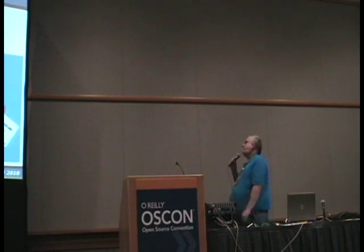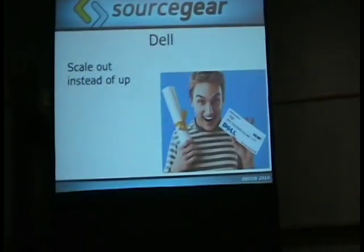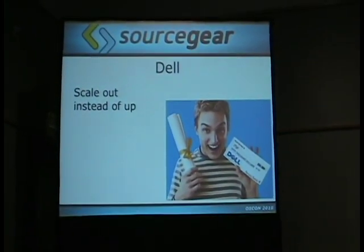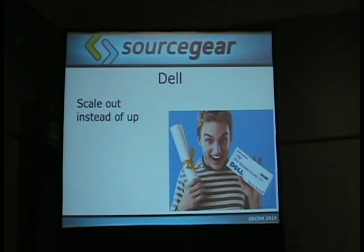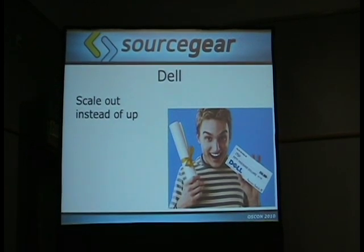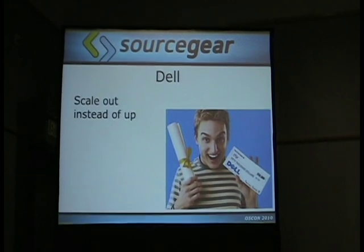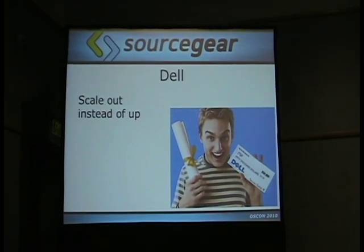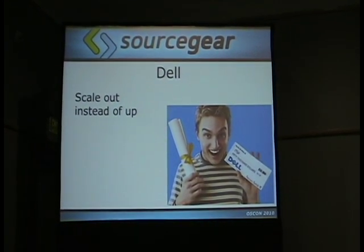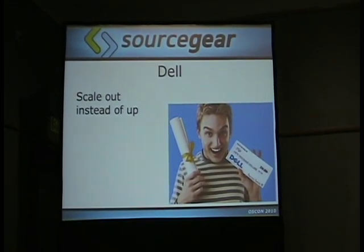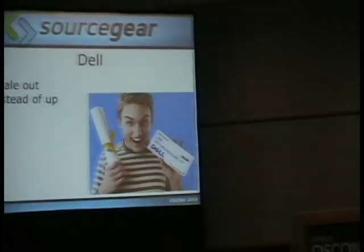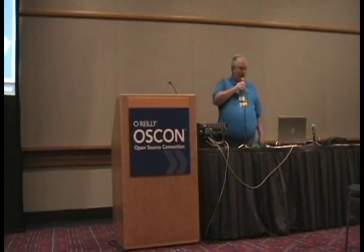Dell — we love DVCSs because they scale out instead of just up. When we have a big team, we don't want to buy a really expensive server. We want to go to Dell and pay for a server where the price is four digits. The scalability model is completely different and it allows us a lot of advantages, one of which is we don't have to buy half-million dollar servers.